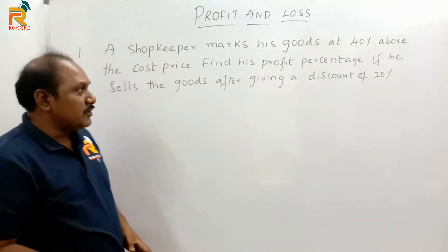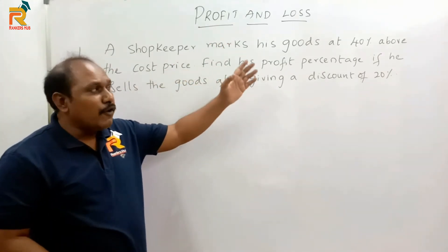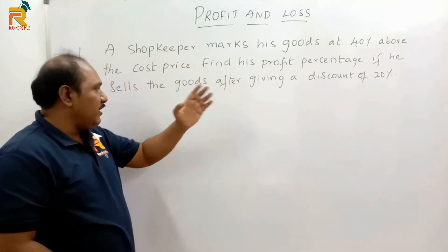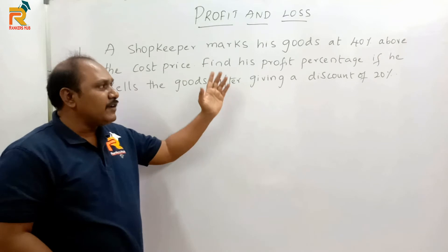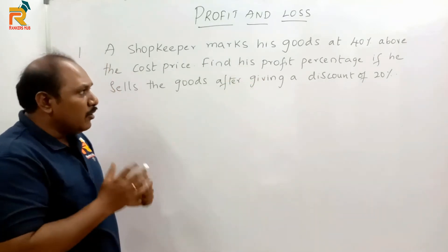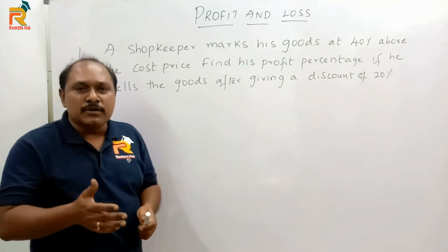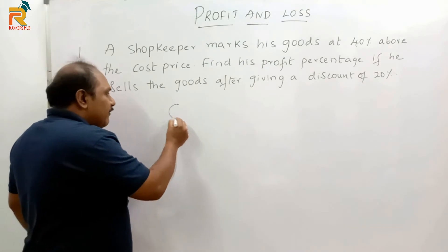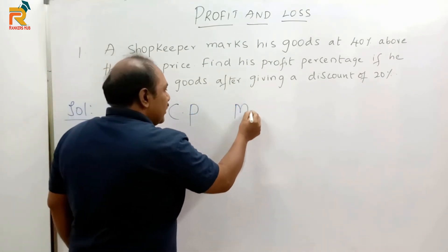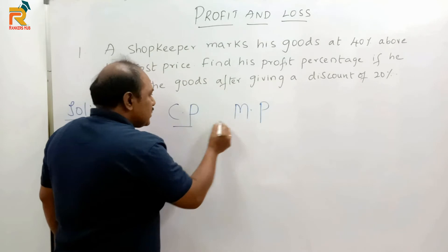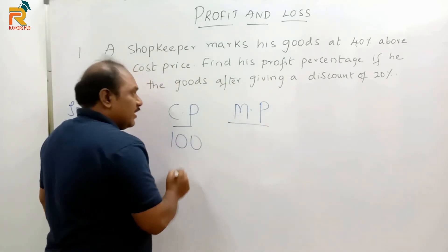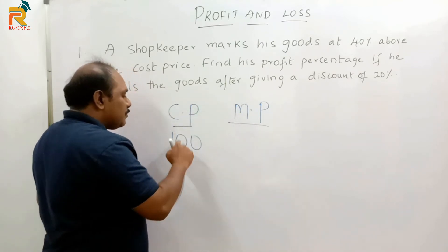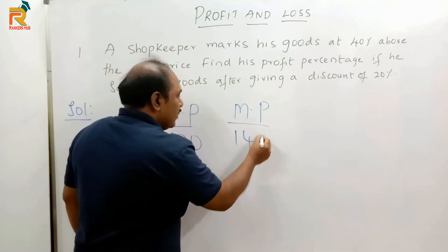Question: A shopkeeper marks his goods at 40% above the cost price. Find his profit percentage if he sells the goods after giving a discount of 20%. He is marking his goods at 40% above the cost price, so unless we know the cost price we cannot decide the marked price. Let us assume the cost price of the article is 100. So the marked price is 40% more than 100, which is 140.